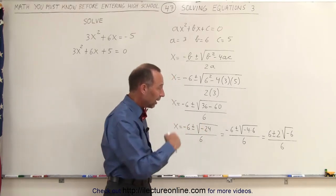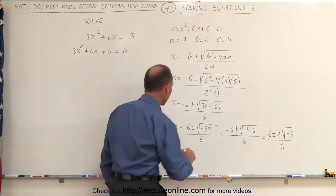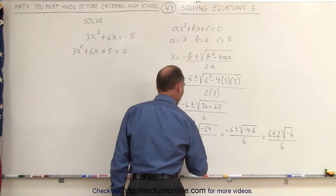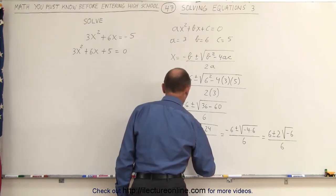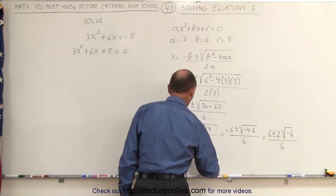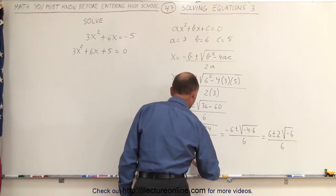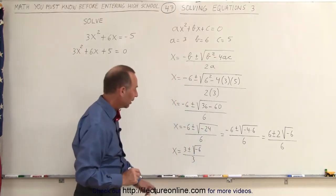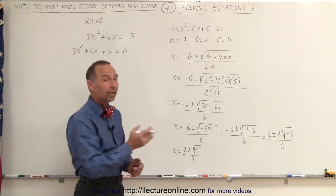And, of course, we can divide the numerator and the denominator by 2 to simplify a little bit more. So we can say x is equal to -3 plus or minus 1 times the square root of -6, all divided by 3.